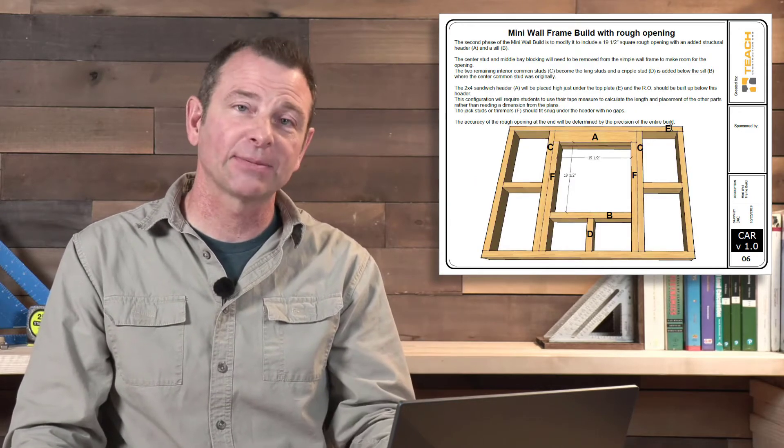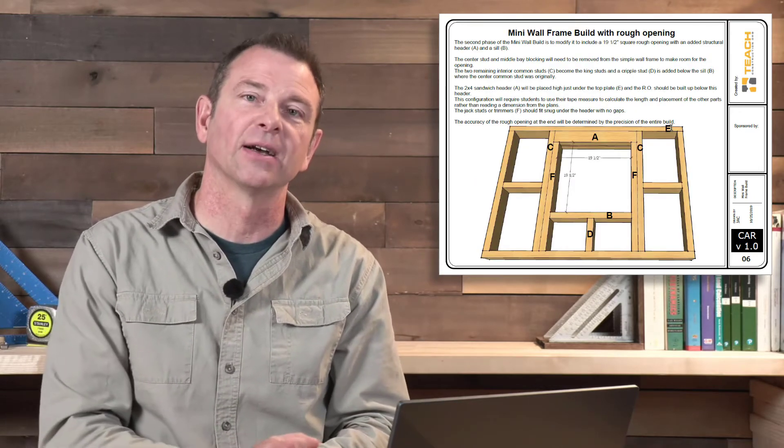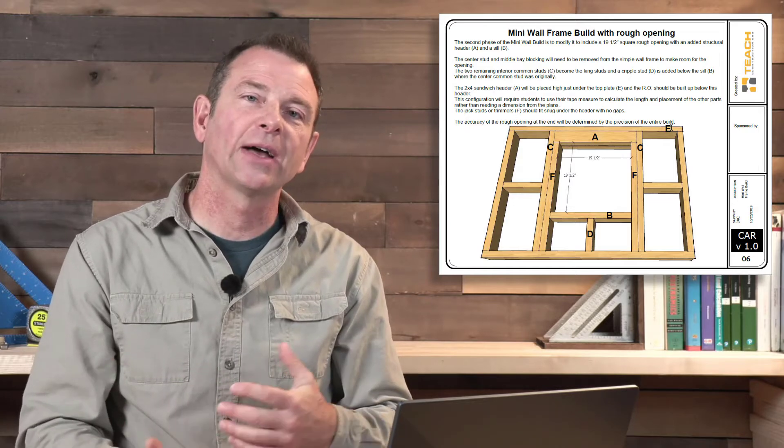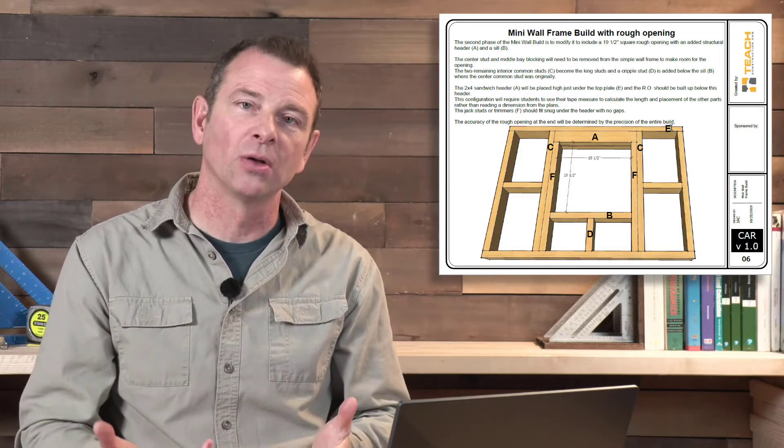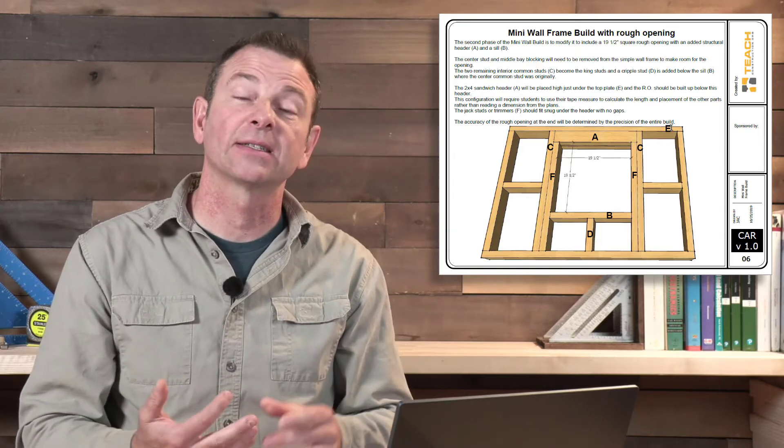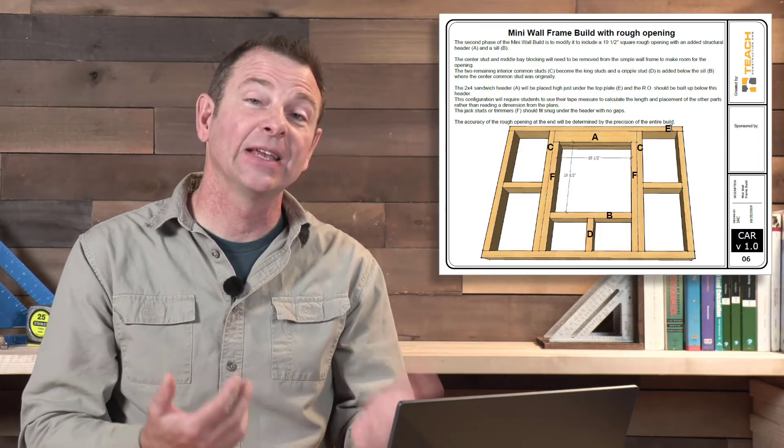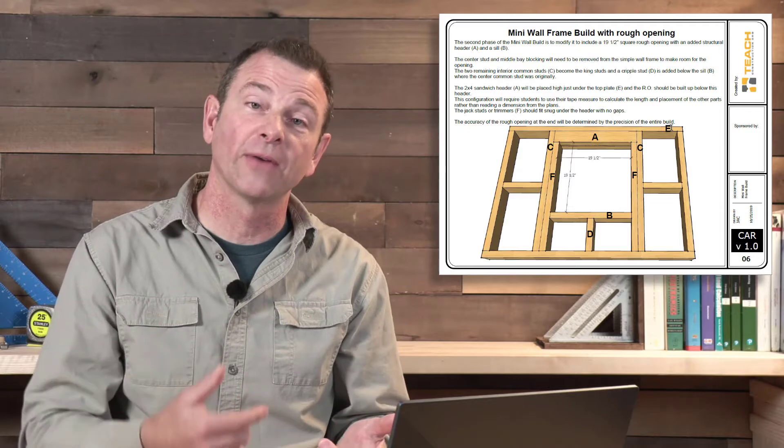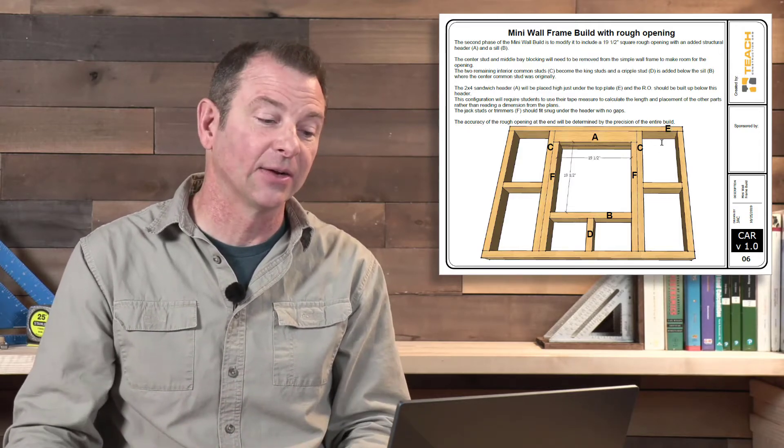And then this last page in the instructor set of the plans shows you how to modify this mini wall to include a rough opening with a sandwich header, jack studs and king studs, even a sill for a window rough opening and then a cripple on layout.